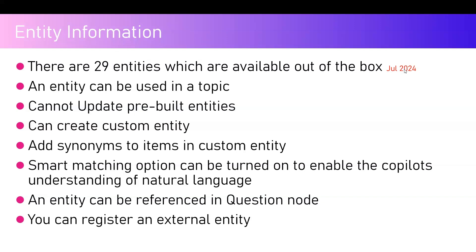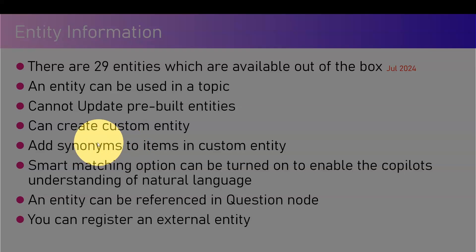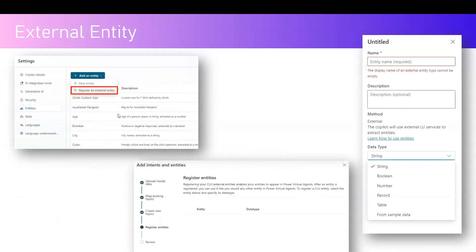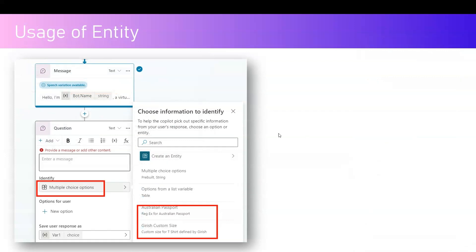In summary: there are 29 entities available out of the box as of July 2024. Entities can be used in a topic. Pre-built entities cannot be updated — their logic or schema stays as-is. You can create custom entities and add synonyms to items. Smart matching can be turned on to enable fuzzy logic matching for natural language understanding. Entities can be referenced in a question node, and you can register an external entity for conversational language understanding.